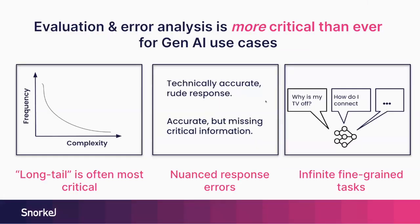In a Gen AI world, this process is more critical than ever. There's this notion that the long tail is often the most critical in these Gen AI use cases. Imagine we're building some sort of e-commerce chatbot. There are certain queries that users might have about shipping issues around credit card transactions where they're actually churn risks. That long tail is often where you want to pay attention to make sure that your LLM is actually operating in a positive way at scale.